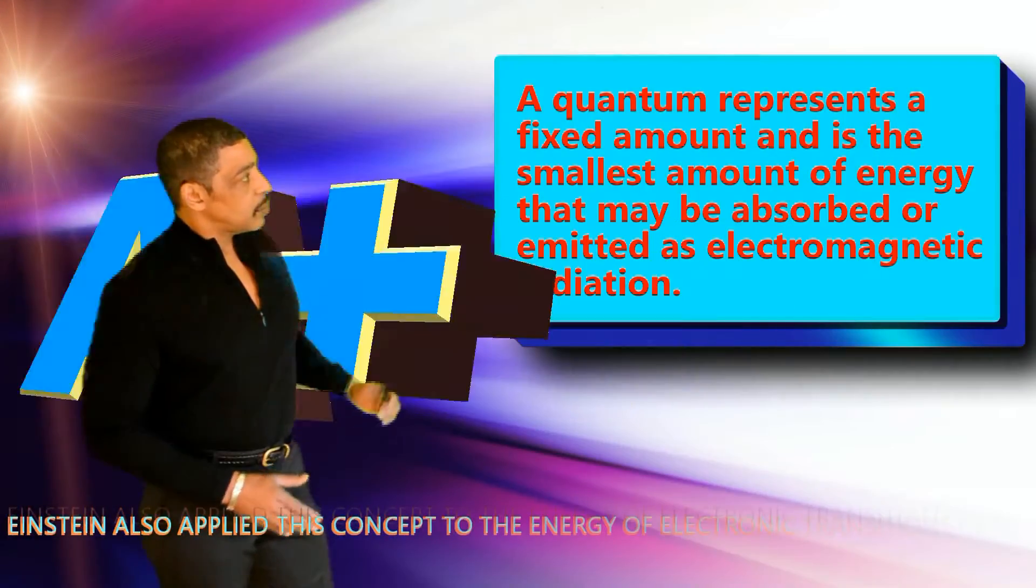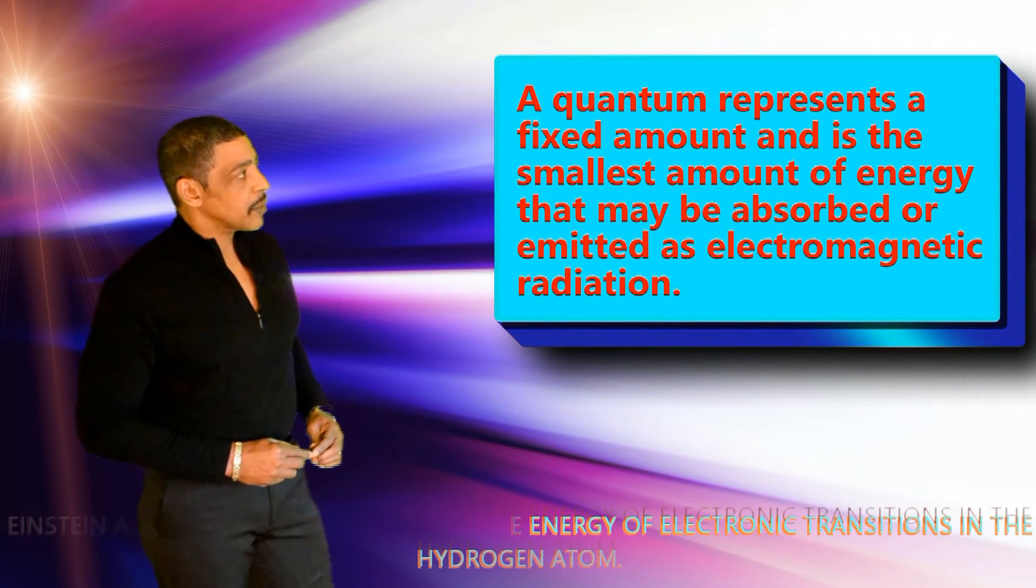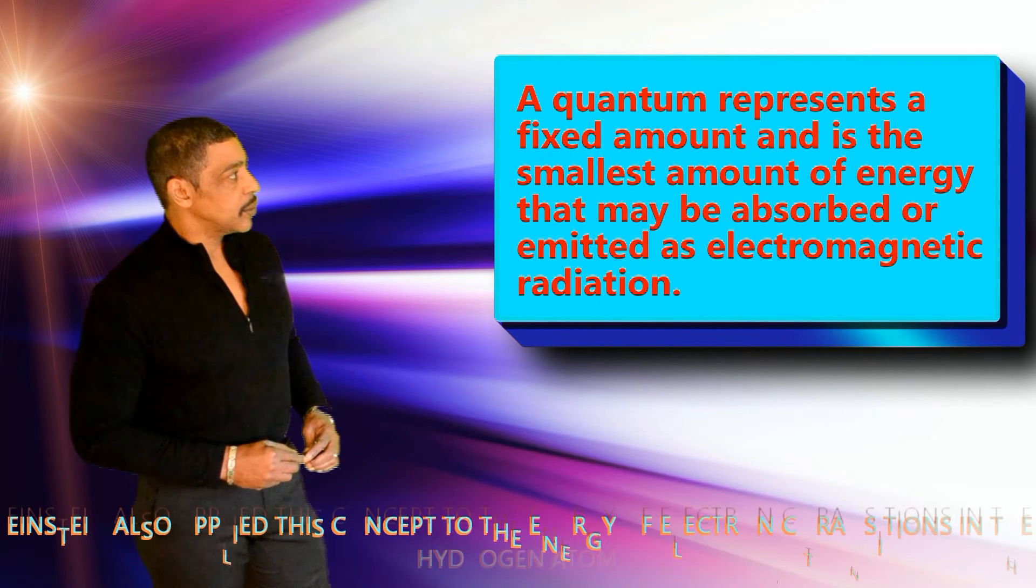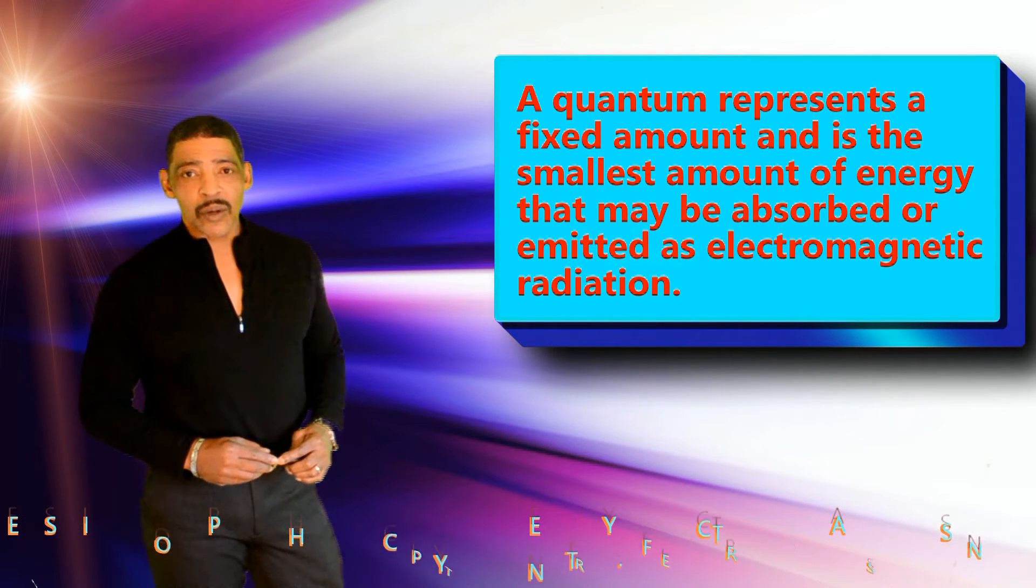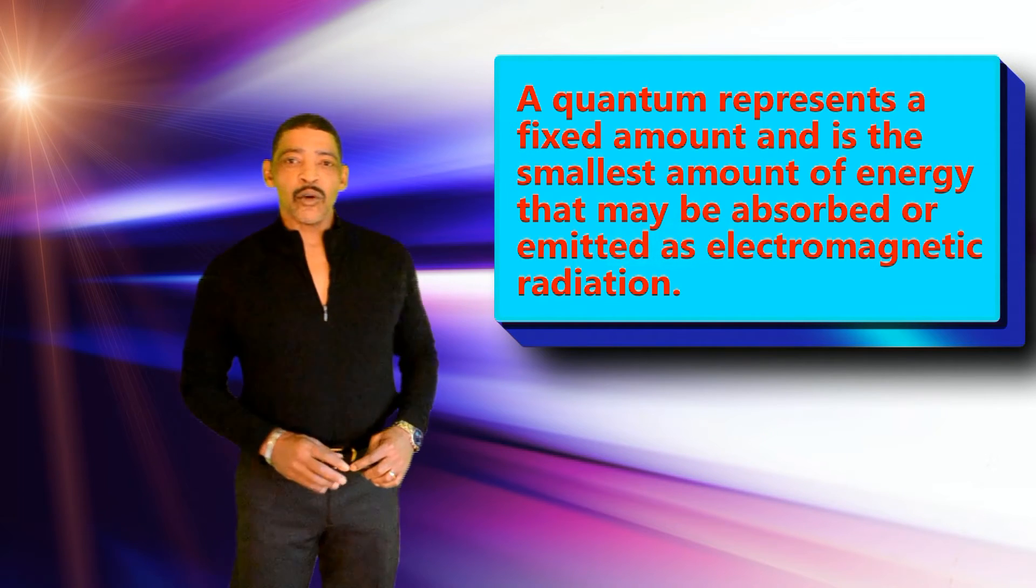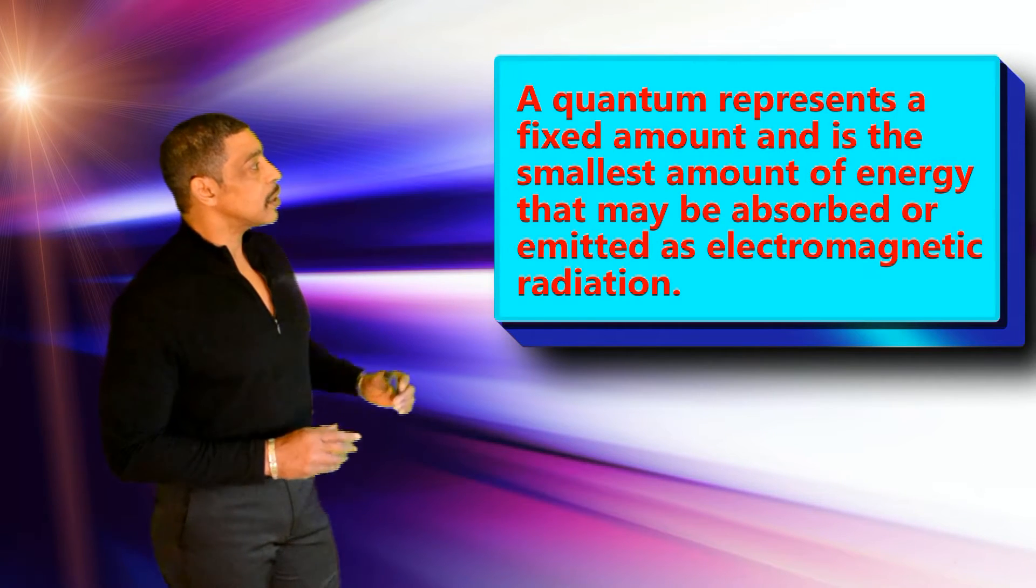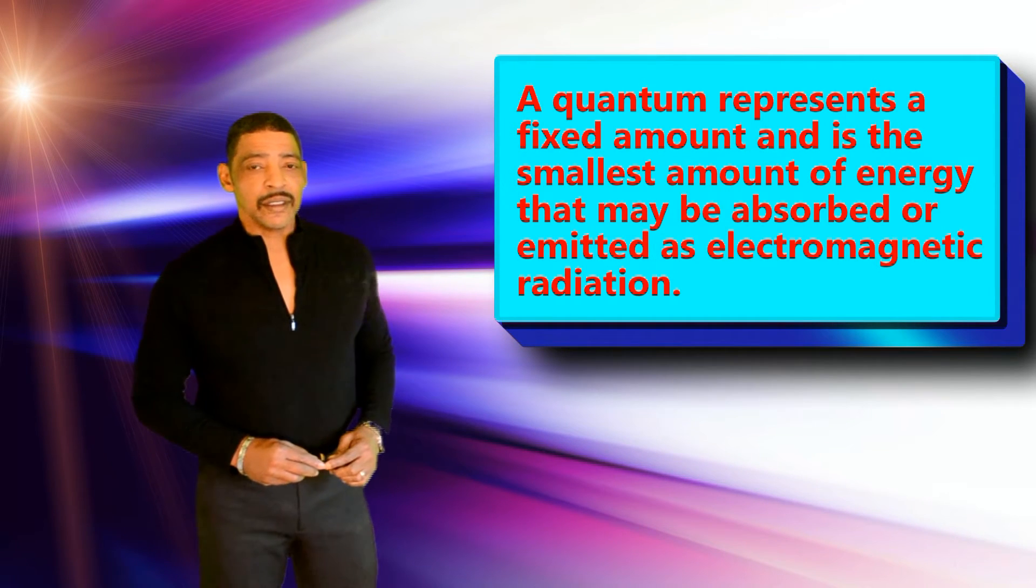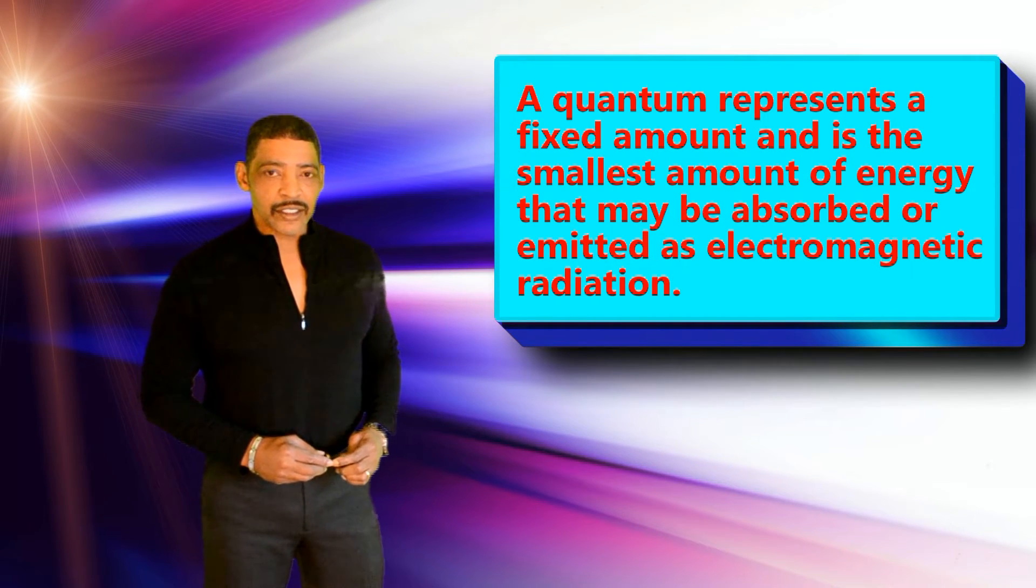Thanks to Max Planck, we now know that this radiation is being emitted in small units that he called quantum, where a quantum represents the smallest amount of energy that may be emitted or absorbed as electromagnetic radiation.